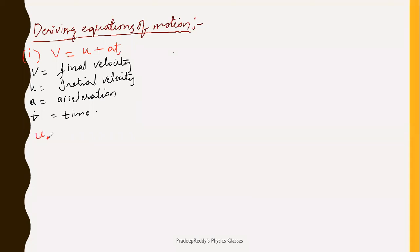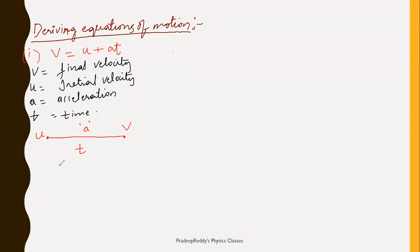Let us consider that a body is starting at one particular point. Its initial velocity is u, it is traveling a certain distance in a particular time t, and finally when it arrives at the end point its velocity is v. During this time it is moving with constant acceleration a. Now, the acceleration equation can be written as a = Δv / Δt.